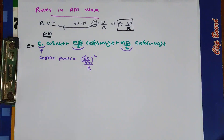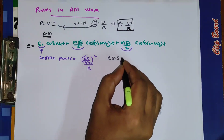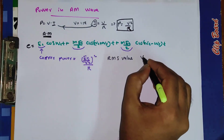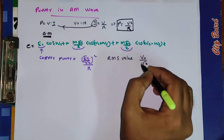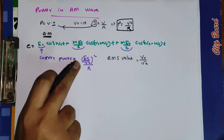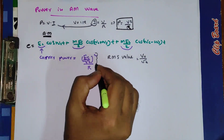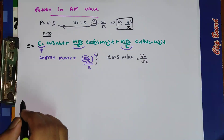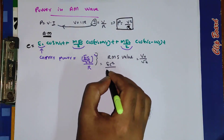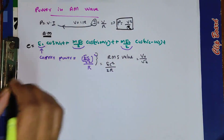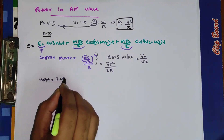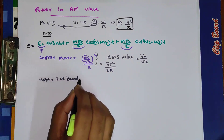If you have peak value V₀, then the RMS value will be V₀/√2. So the carrier power, substituting, is equal to EC² / 2R. Now let us consider the upper sideband power.